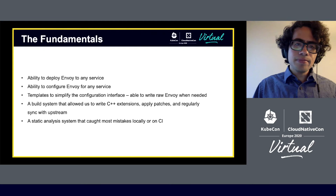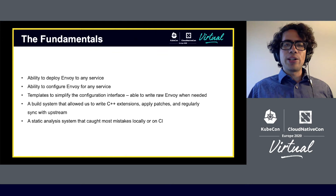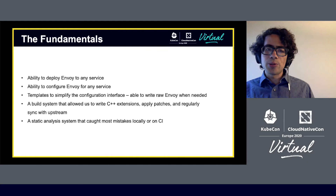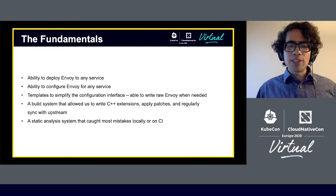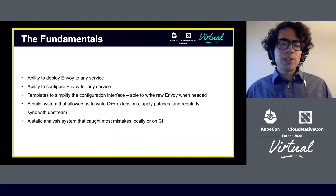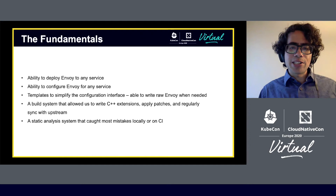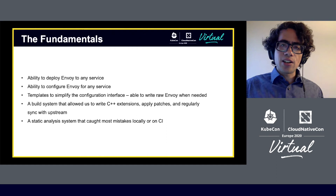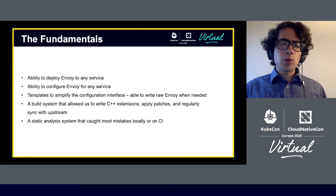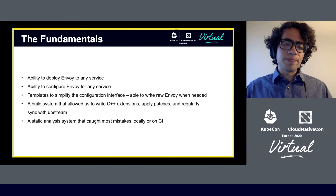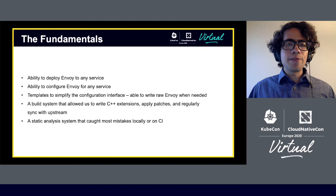At this point, we had really nailed the fundamentals of what it meant to package and deploy Envoy in a generic fashion. We had the ability to deploy Envoy to any service through our deployment tool, configure Envoy for any service through our compiler and configuration pipeline, and use templates to provide a simple interface while still allowing raw Envoy config for complex use cases. We also had a build system through the open source Envoy project that allowed us to write C++ extensions, apply patches, and regularly sync our Envoy build with upstream — often up to twice a week.